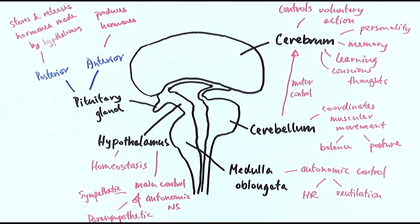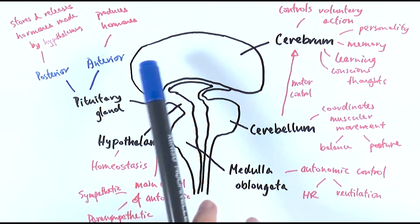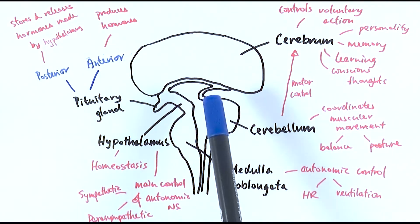So this is the structure of your brain. There are five major sections. So you've got the cerebrum which is the main part of the brain that controls voluntary actions, personality, memories and learning.